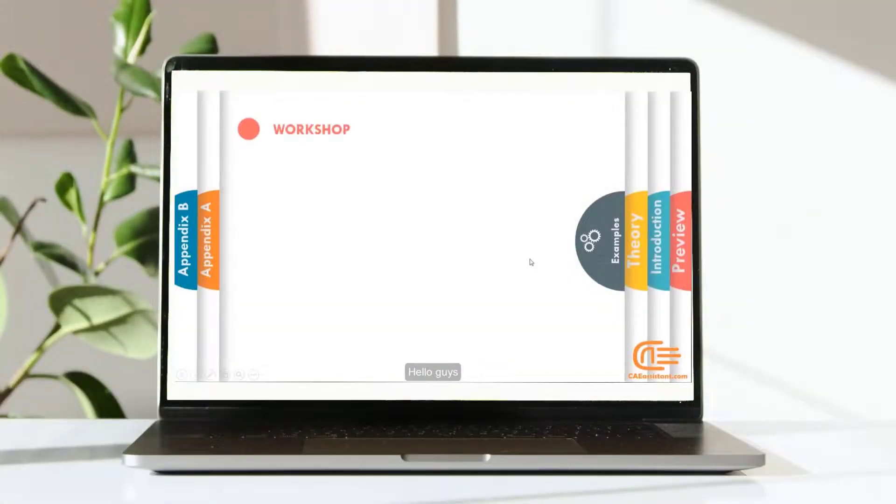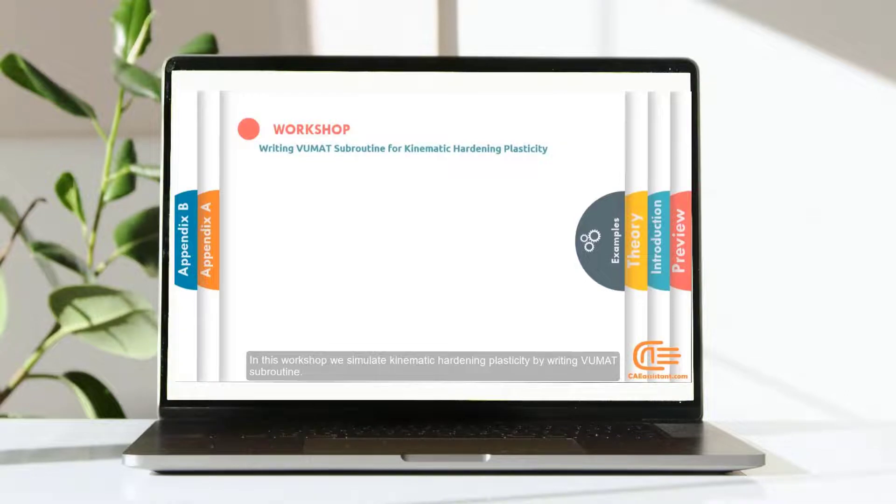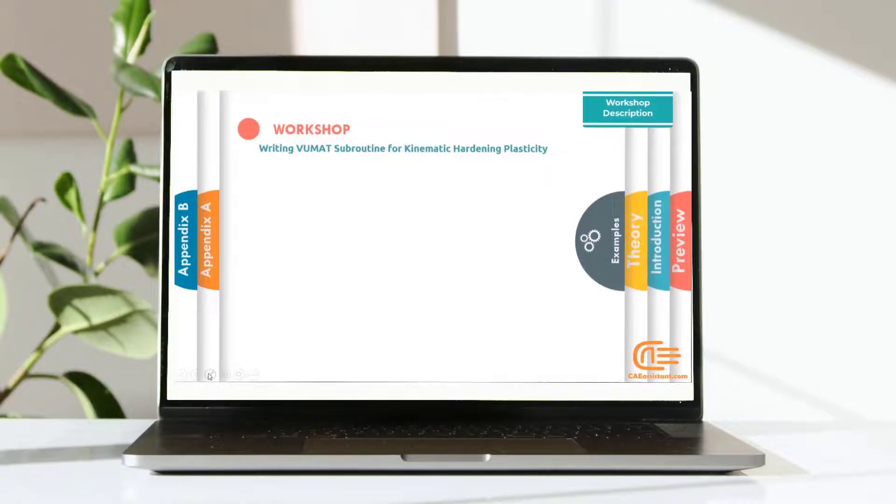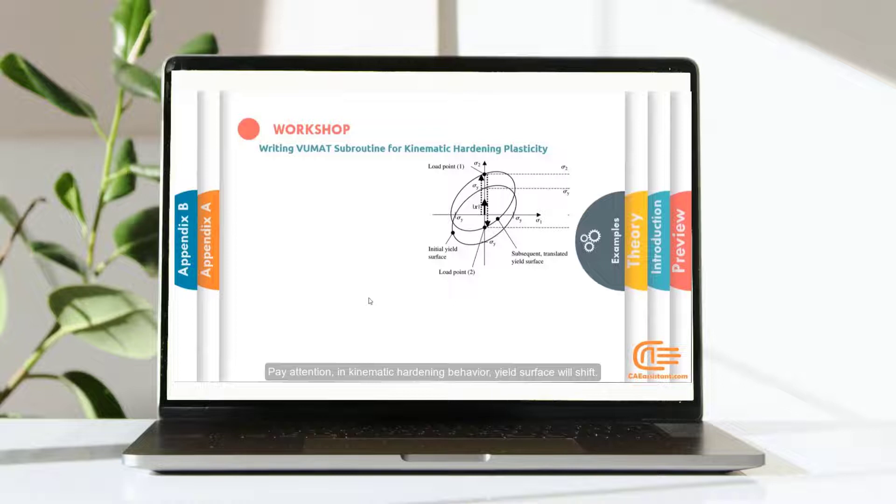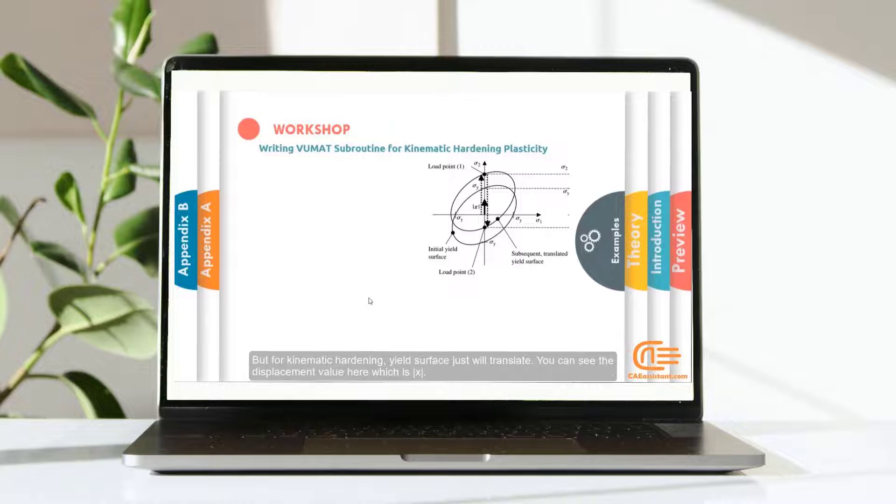Hello guys! In this workshop, we simulate kinematic hardening plasticity by writing VUMAT subroutine. Pay attention, in kinematic hardening behavior, yield surface will shift. In isotropic hardening, the yield surface will be larger. But for kinematic hardening, yield surface just will translate. You can see the displacement value here, which is X. That is subroutine flowchart.